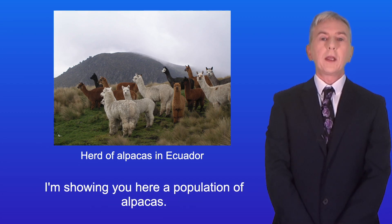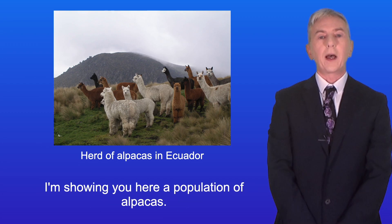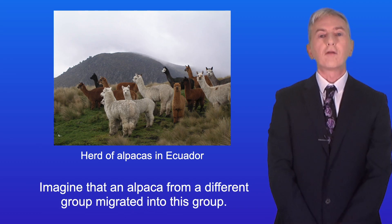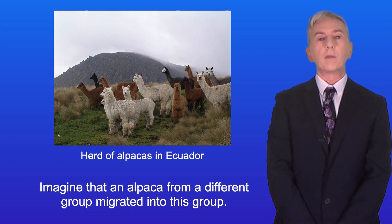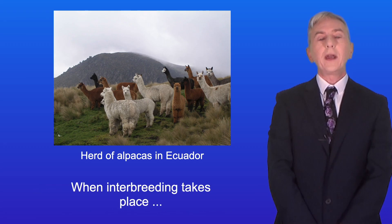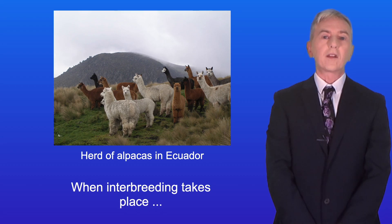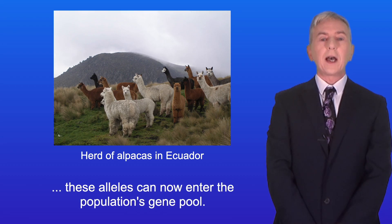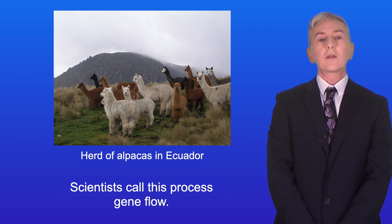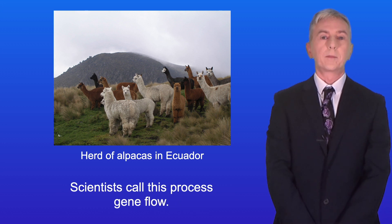Here is a population of alpacas. Imagine that an alpaca from a different group migrated into this group. This individual may have different alleles, and when interbreeding takes place these alleles can now enter the population's gene pool. Scientists call this process gene flow.